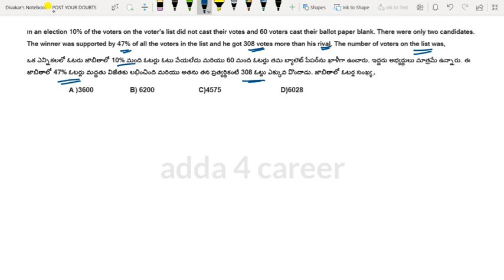So this question, if you do 100 percent check the total voters. I'll take this as 100 percent of the voters. If 10 percent of the voters didn't vote, you can take that out. And 60 voters cast blank ballots. The winner got 47 percent of the total voters.